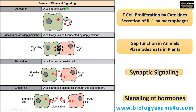Let me summarize. There are four types of signaling. First, autocrine signaling — self-signaling or self-stimulation — examples include T cell proliferation by cytokines and secretion of interleukin-1 by macrophages. Second, direct cell-to-cell signaling through gap junctions in animals and plasmodesmata in plants. Third, paracrine signaling where a cell targets a nearby cell — classical example is synaptic signaling. Finally, endocrine signaling where hormones released into the bloodstream travel a long distance and have an effect on a distant target cell.